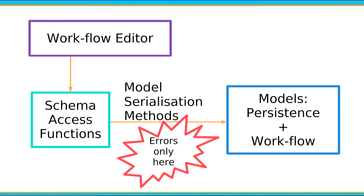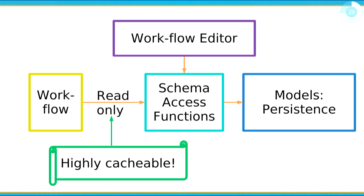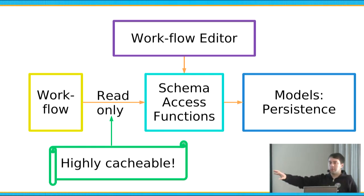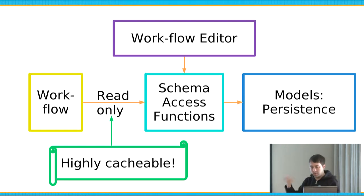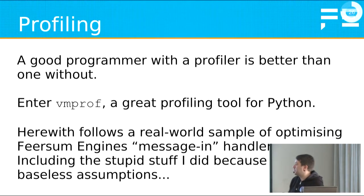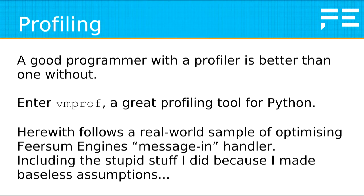I had a workflow editor using direct Django model access with models handling both persistence and workflow logic, and it was a disaster — things broke all the time for no reason. I put a JSON schema in between with serialization and deserialization methods, and errors only happened at that boundary. In the span of about a week, the program was significantly more robust and the editor stopped failing for bizarre untraceable reasons. It is worthwhile breaking things out. I then broke out the workflow to run separately, and since it only reads the workflow configuration read-only, that was a fantastic opportunity for caching, and I got a nice performance boost.